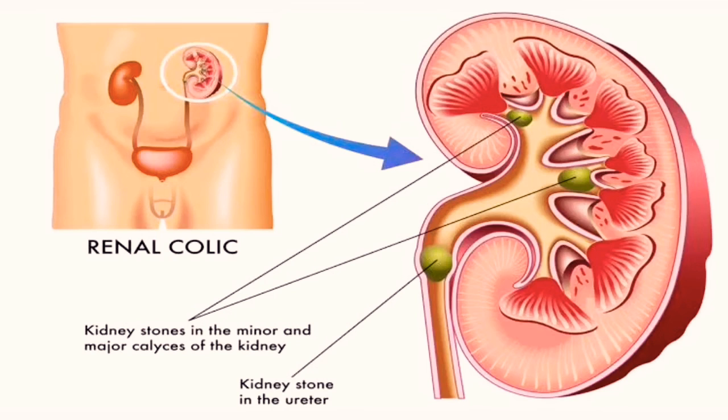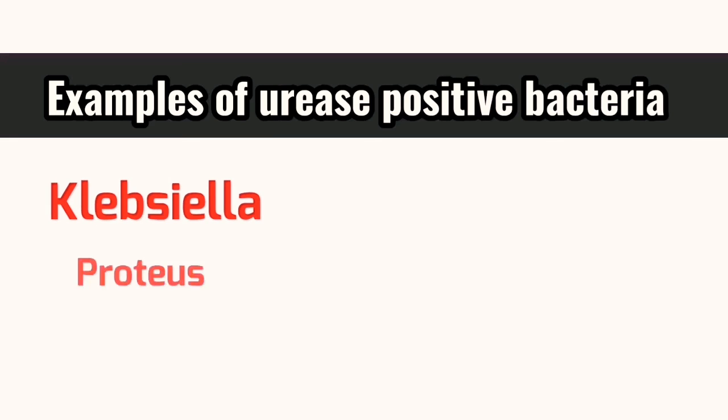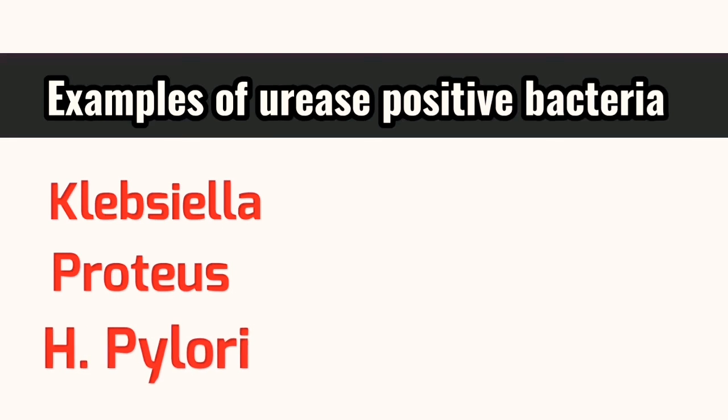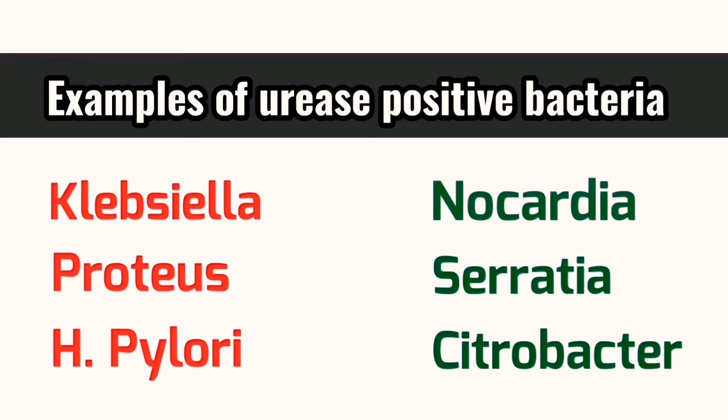Bacteria producing urease enzyme are Klebsiella, Proteus, Helicobacter pylori, Nocardia, and some species of Serratia and Citrobacter.